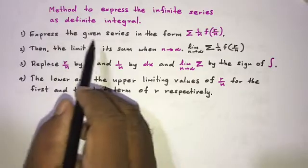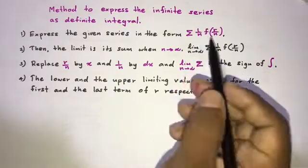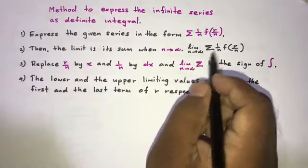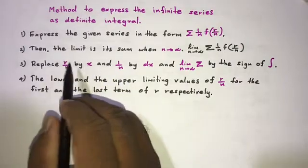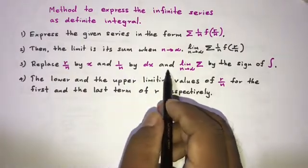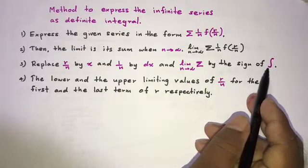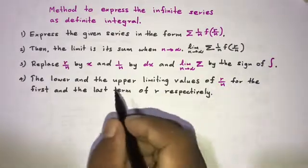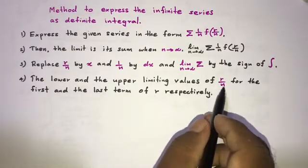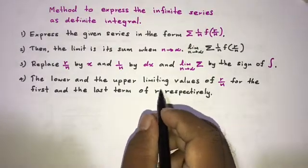Method to express the infinite series as a definite integral. First step: express the given series in the form sum of (1/n) · f(r/n). The limit of its sum when n approaches infinity — then replace r/n by x and 1/n by dx, and replace the limit n→∞ sum by the integral sign. Finally, take the lower and upper limits as the limiting values of r/n for the first and last term of r respectively.